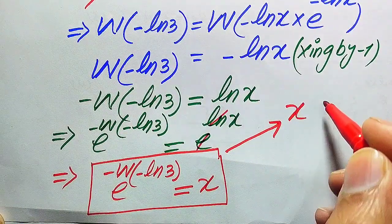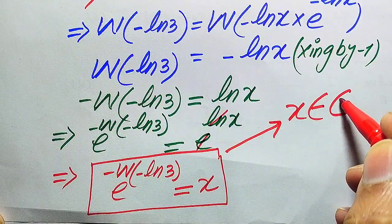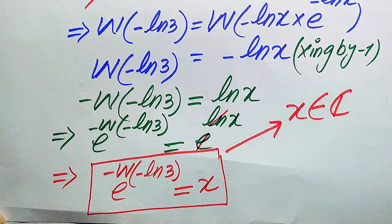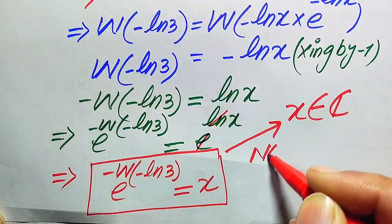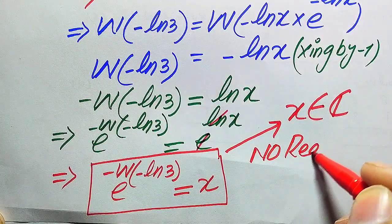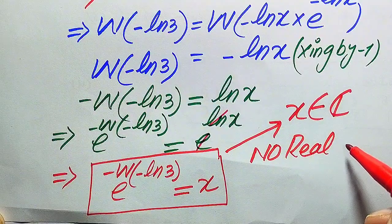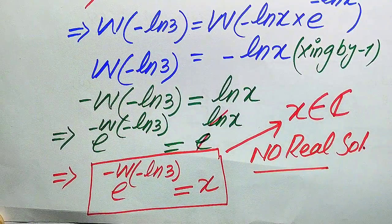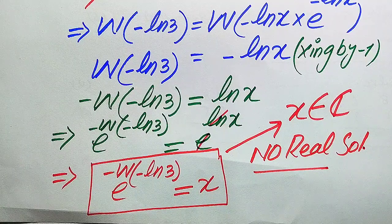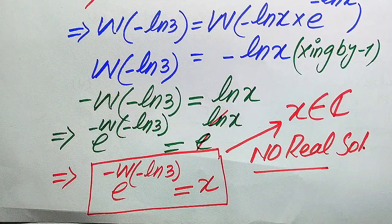This value of X is a complex value, meaning X belongs to the complex numbers. This means our equation has no real solution. This is our final answer. Thank you so much for watching this video — please subscribe to my channel for more exciting videos.